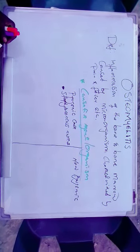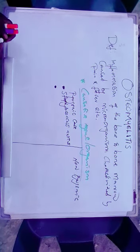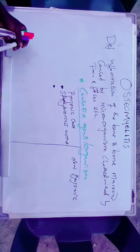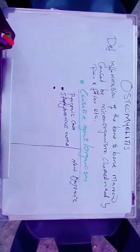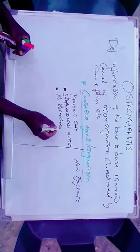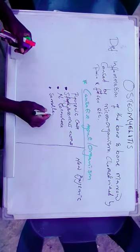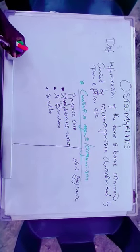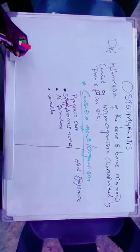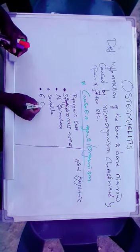Under pyogenic causes, the most common cause of osteomyelitis is Staphylococcus aureus — the most common pyogenic cause. We also have patients who have a sexually transmitted infection caused by Neisseria gonorrhea; that organism can enter the bloodstream and infect the bone. Patients with sickle cell disease are susceptible to Salmonella, which can also enter the bloodstream and reach the bone. We also have E. coli.